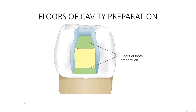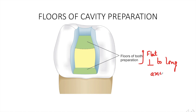Coming to the floors of tooth preparation — a floor is a prepared wall which is usually flat and perpendicular to the long axis of the tooth, that is perpendicular to the occlusal forces which are directed occlusally-gingivally. For example, the pulpal and gingival floors, as you can see in this image.